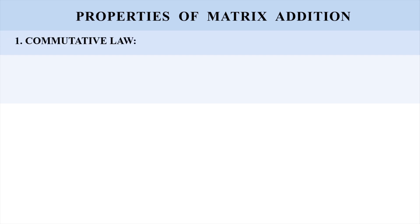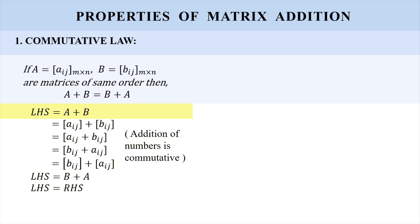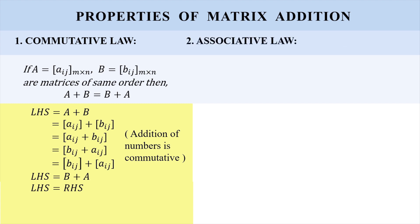Now looking at the properties of matrix addition. The first one is the commutative law: if A and B are two matrices of the same order m cross n, then A plus B equals B plus A. Starting the proof with LHS, A plus B: since both matrices are of the same order, we can add them to get [a_ij plus b_ij]. Recalling that addition of numbers is commutative, we reverse the elements to get [b_ij plus a_ij], which splits into B plus A. Hence LHS equals RHS, and the result is proved.